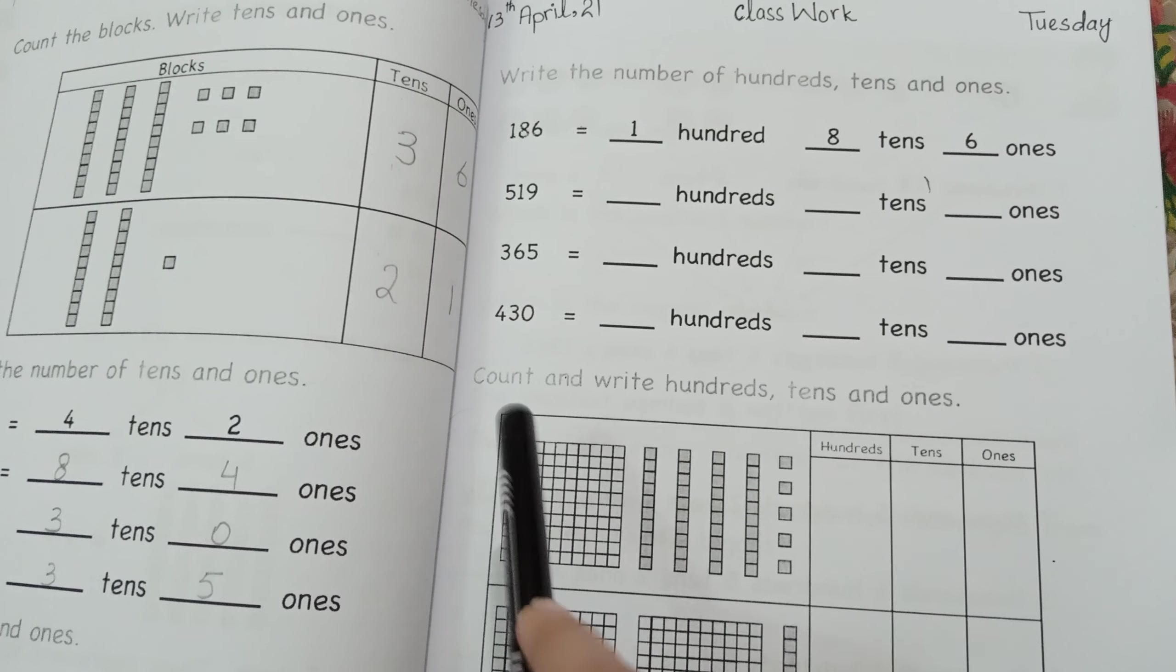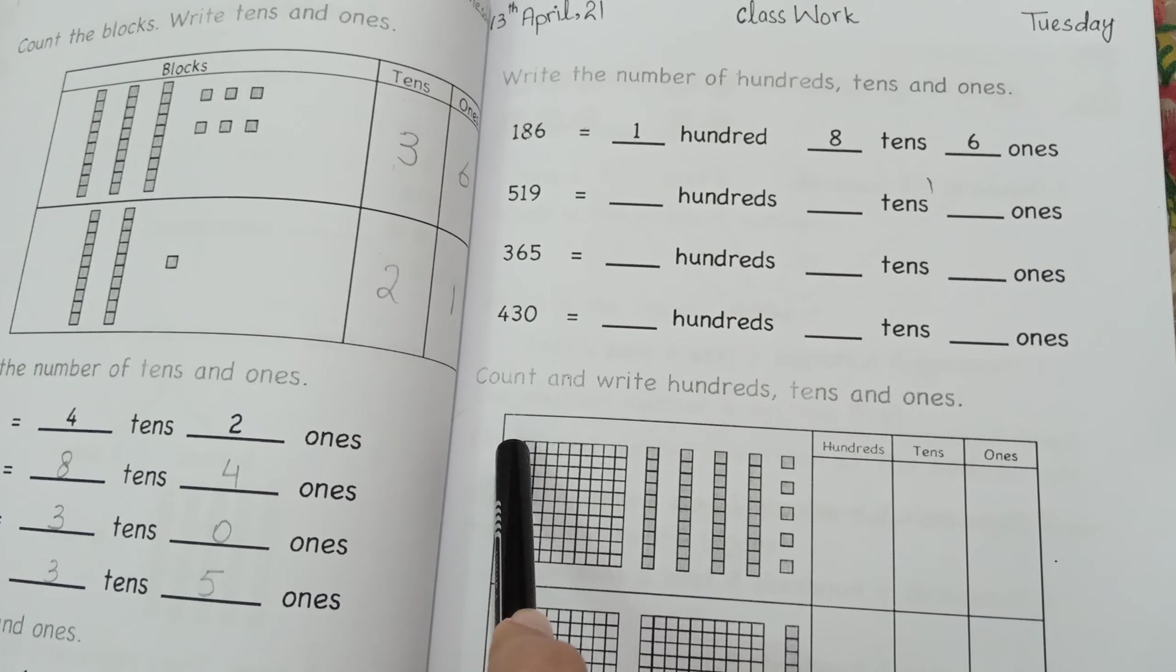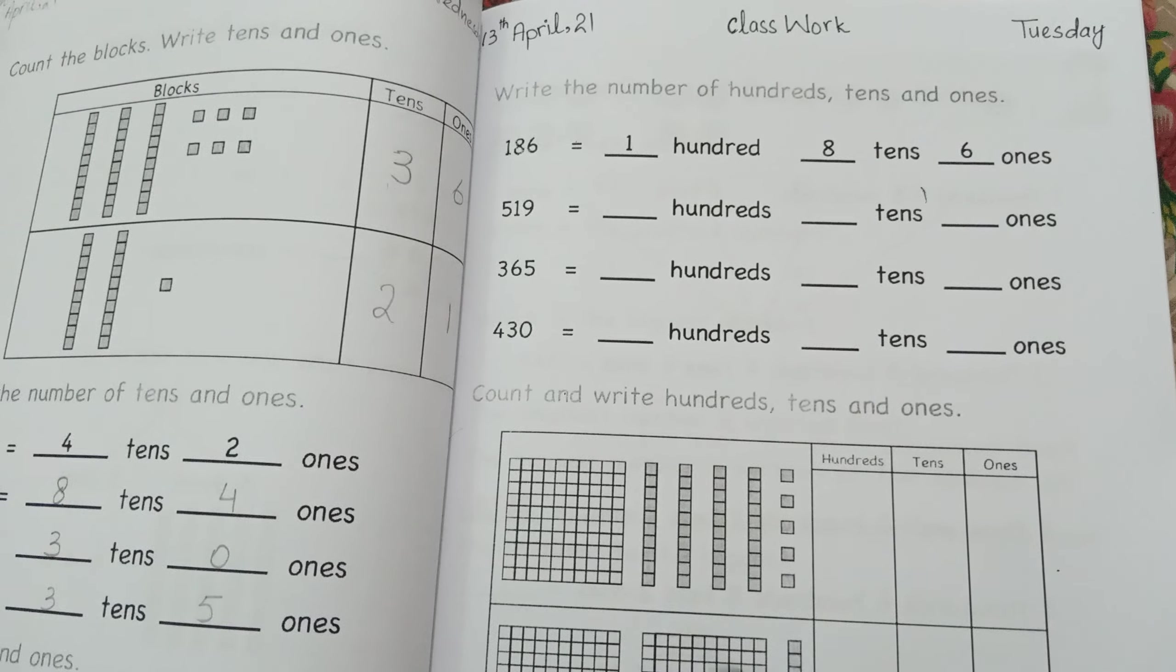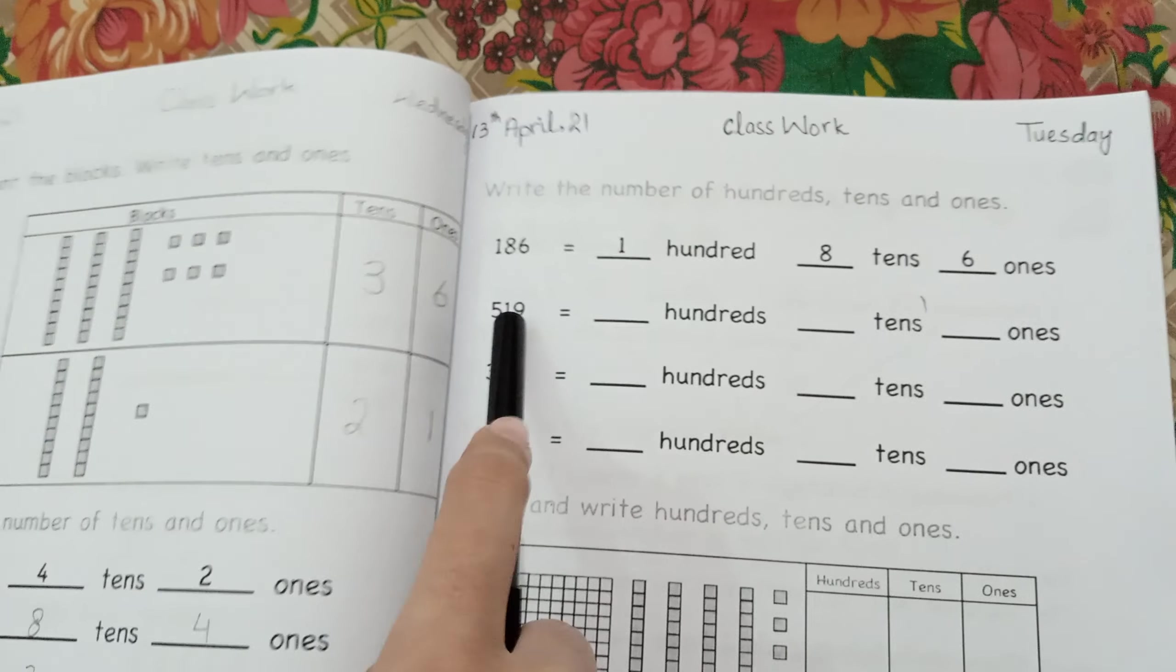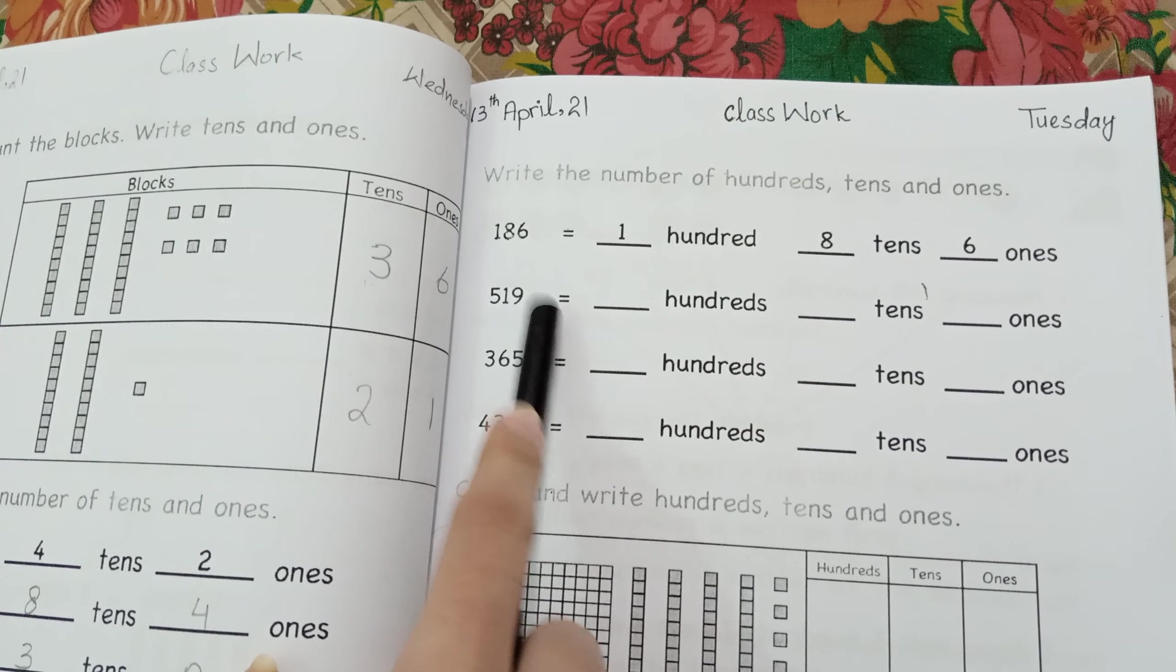If this is 1 block, it means that this is 100. If there are 2 blocks, it means that this is 200. Now, here we have 5, 1, 9.